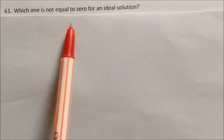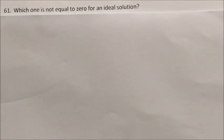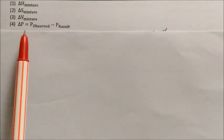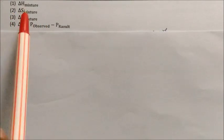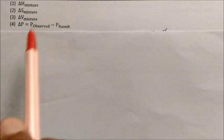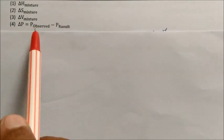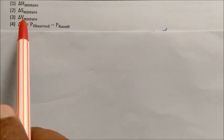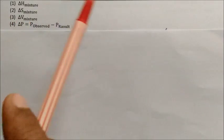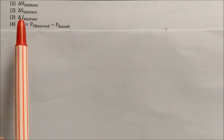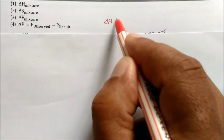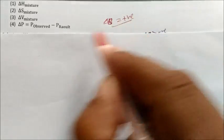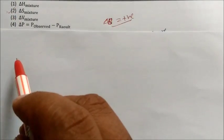Question: Which of the following is NOT equal to zero for an ideal solution? Options: ΔH_mix, ΔS_mix, ΔV_mix, and ΔP (deviation from Raoult's law). For an ideal solution: ΔH = 0, ΔV = 0, ΔP = 0 (no deviation from Raoult's law). However, ΔS of mixing is always positive — even in ideal solutions, when two molecules interact, entropy increases. So ΔS_mix ≠ 0. Answer: option 2.